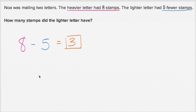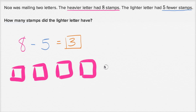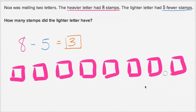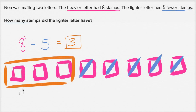Another way to think about it: the heavier letter had eight stamps, so let's draw eight stamps — one, two, three, four, five, six, seven, eight. The lighter letter had five fewer, so let's take away one, two, three, four, five. What are you left with? These three stamps right over here — that's how many stamps the lighter letter had.